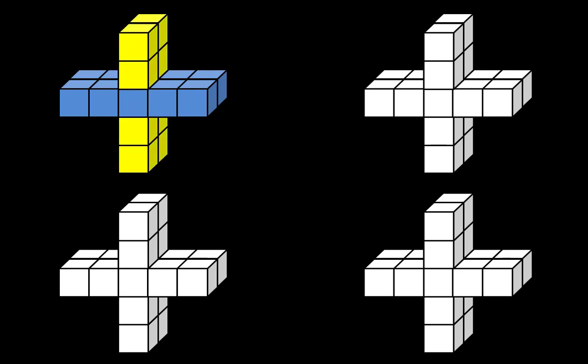Another way is to see a vertical group of ten, plus two groups of four. Or to see wings around the outside, like this.